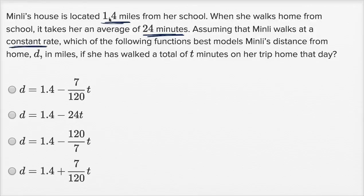Assuming that Minley walks at a constant rate, and we can figure that out because we know how far she walks in a certain amount of time, which of the following functions best models Minley's distance from home, d, in miles, if she has walked a total of t minutes? So t is going to be in minutes, so all our units are going to be minutes and miles, and that's good because they gave us things in terms of minutes and miles. If this was in seconds or hours, we would have to do some conversion.